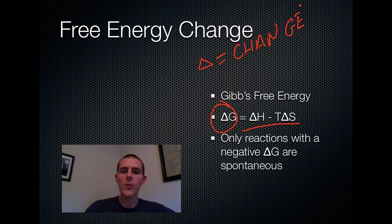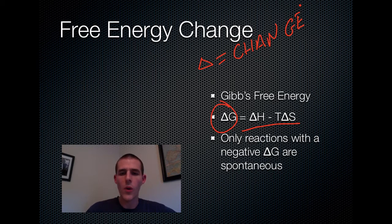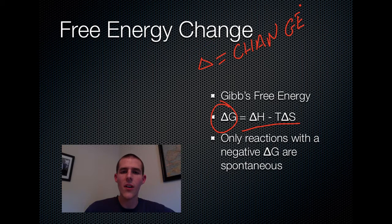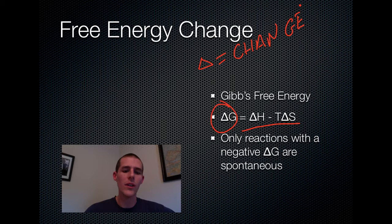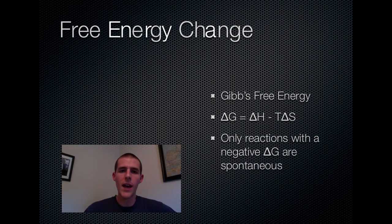For Gibbs's equation, delta G is the change of energy in a system — specifically free energy, that is energy available to do work. You don't really need to understand all of the pieces of the equation. Just know this: we are measuring the energy needed to get a reaction going. Only reactions with a negative delta G are spontaneous. So if the overall reaction has a negative delta G, you don't have to put anything in to get it going — it's going to be a spontaneous reaction, one that just happens on its own without the organism having to spend any energy.